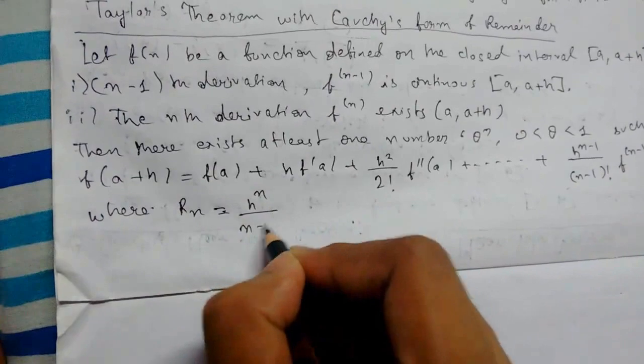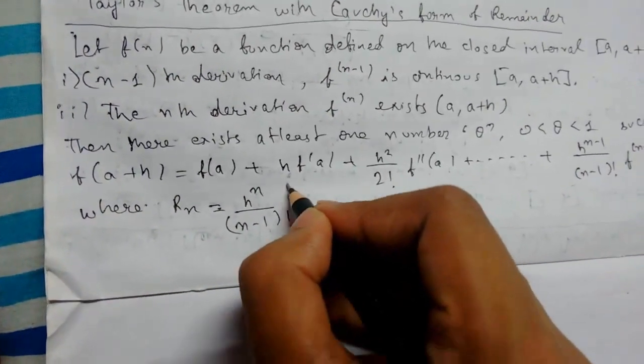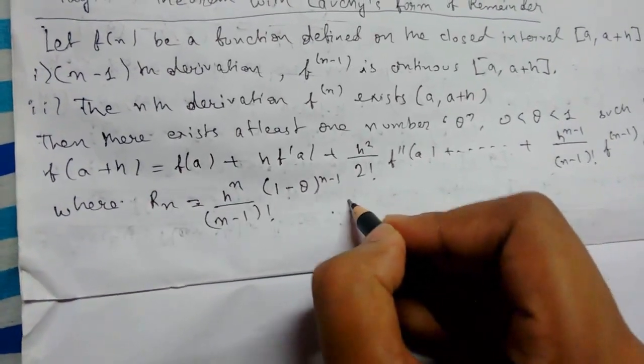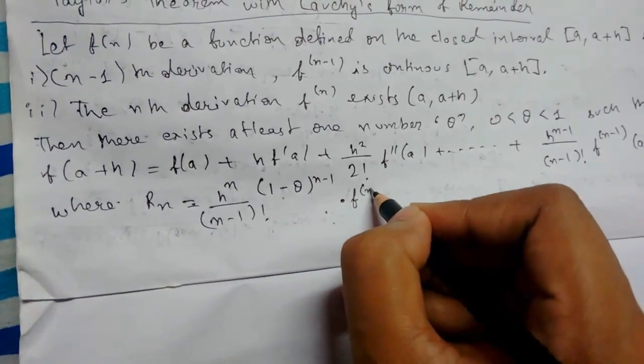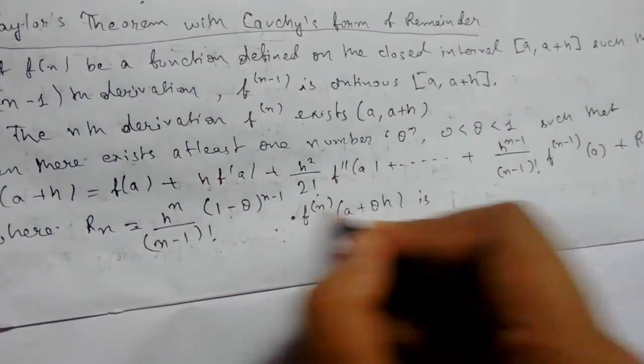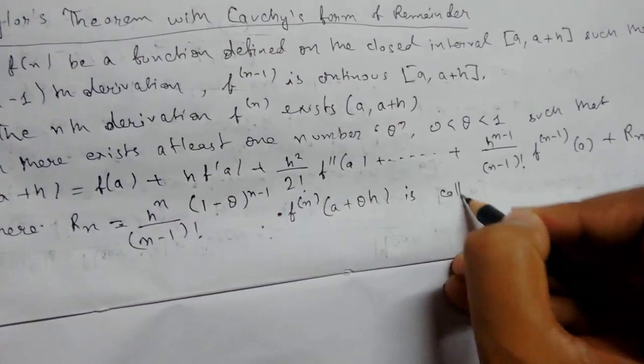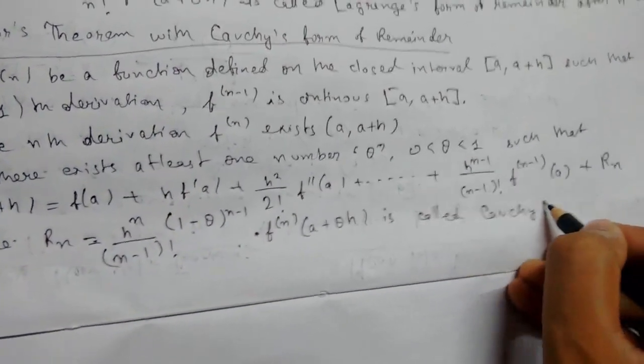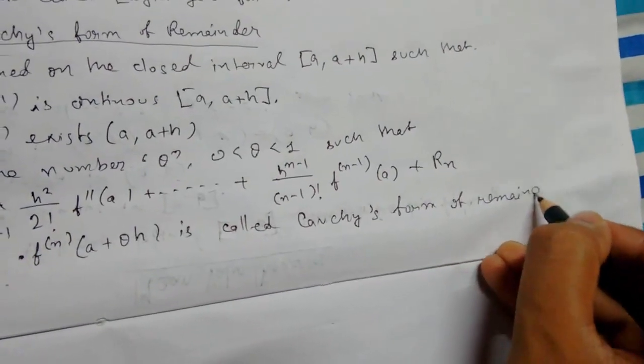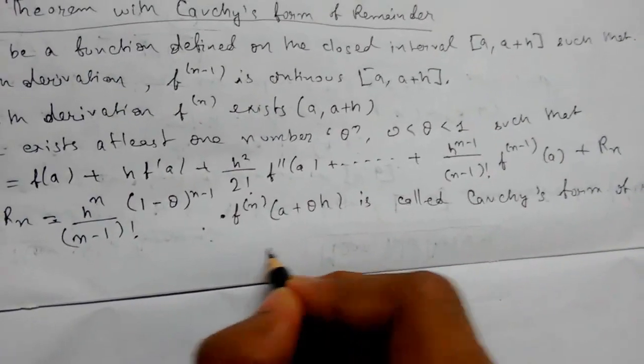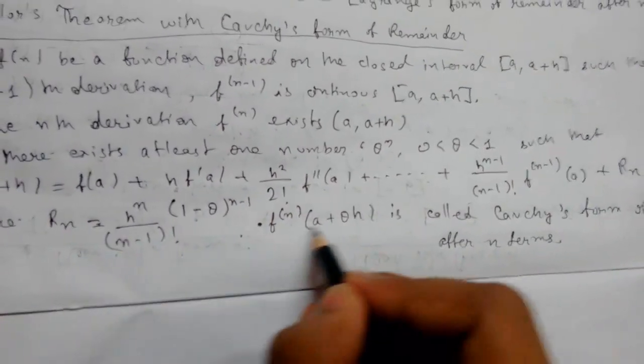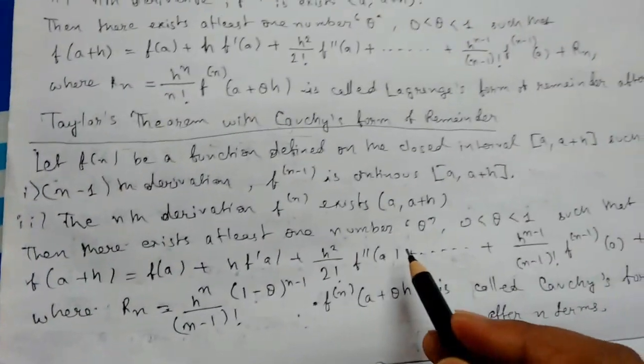Where R_n equals h^n/(n-1)! times (1-θ)^(n-1) times f^(n)(a + θh). This R_n is called Cauchy's form of remainder after n terms. So these are the two: Taylor's theorem in Lagrange's form of remainder and in Cauchy's form of remainder.